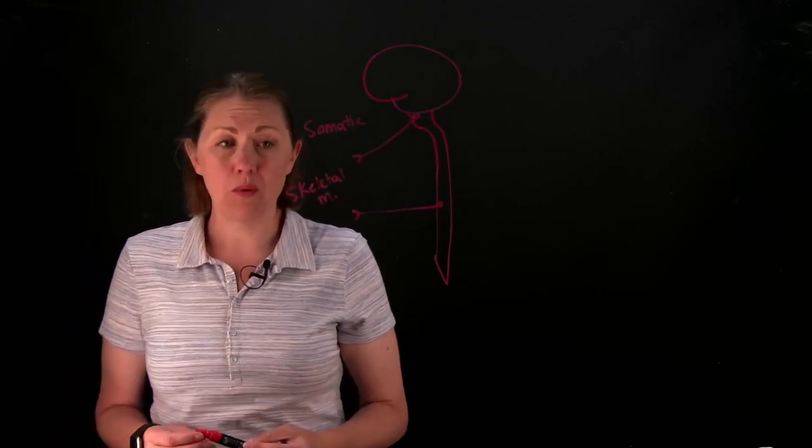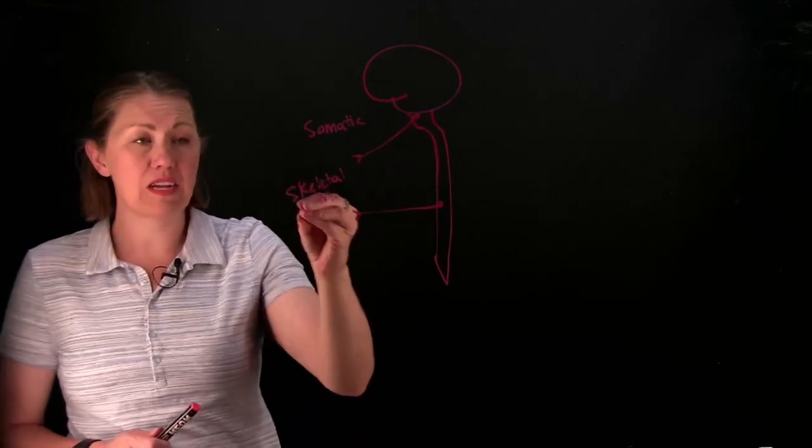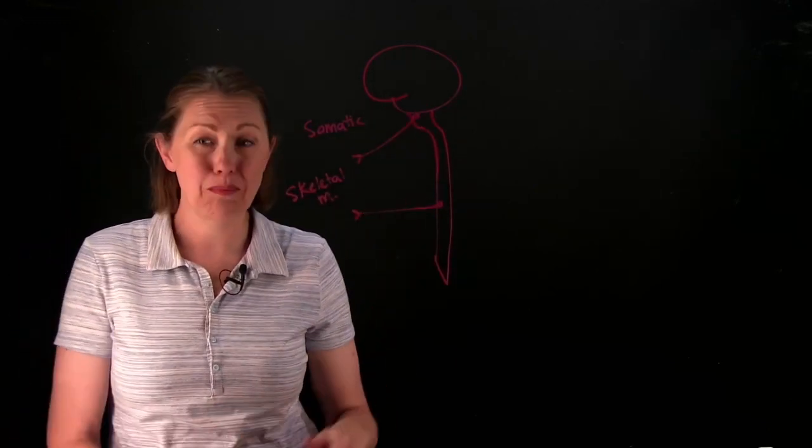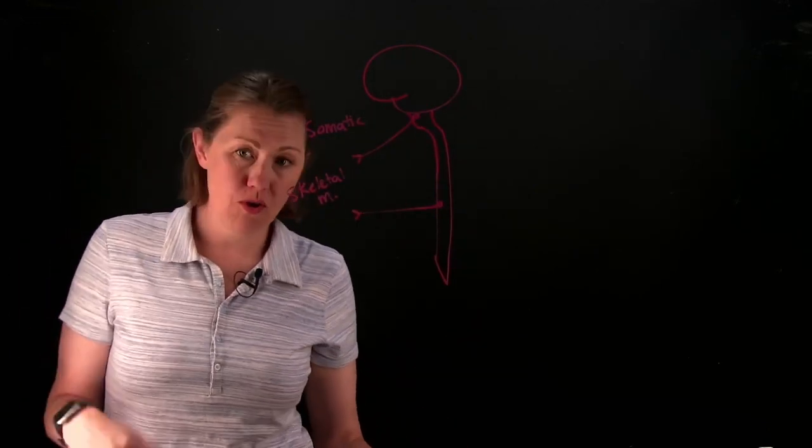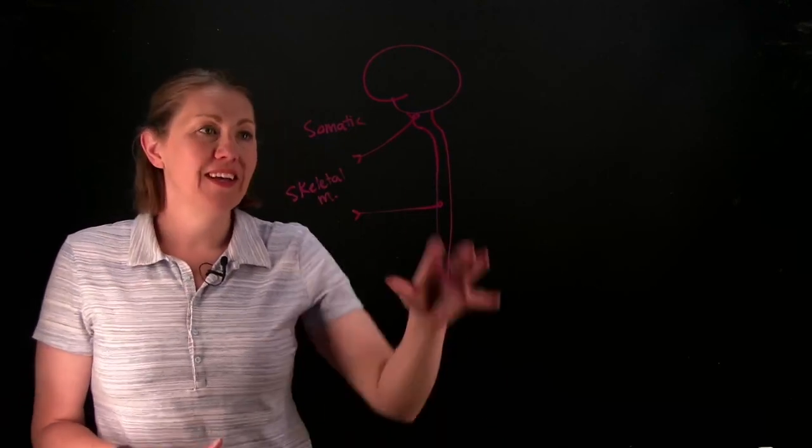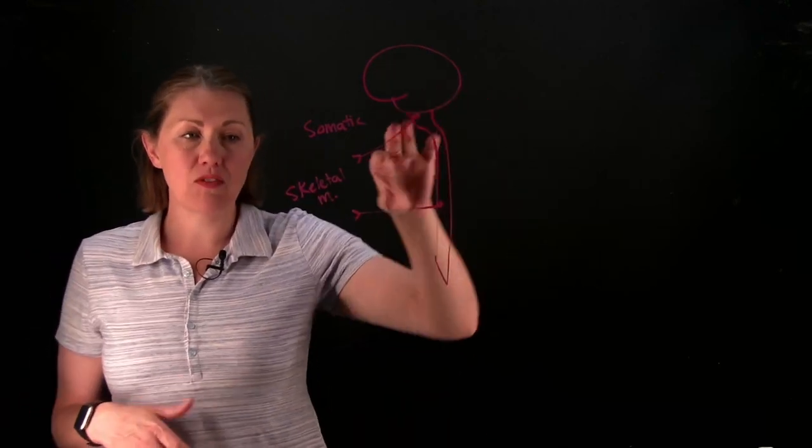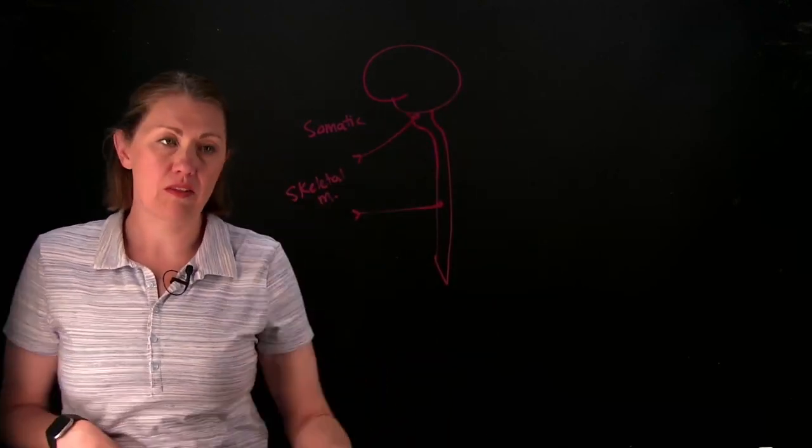That's the only effector that you have. These are conscious signals being sent to skeletal muscle to say lift your arm, rub your nose, hop on one foot. That's direct from the CNS to your target, your target's skeletal muscle.